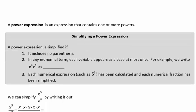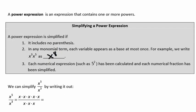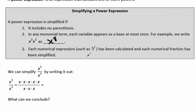A power expression is an expression that contains one or more powers. A power expression is simplified if it contains no parentheses, and in any monomial term a base appears at most once. For example, x cubed times x to the 5th would simplify to x to the 8th. And if you have a numerical expression such as 5 squared, it's been calculated — such as 25. Any fraction should also be simplified.